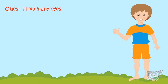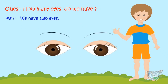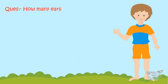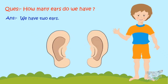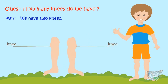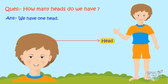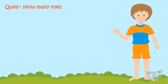Now let's move to the next question. How many eyes do we have? We have two eyes. How many ears do we have? We have two ears. How many knees do we have? We have two knees. How many heads do we have? One head.